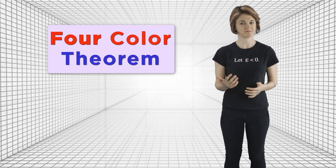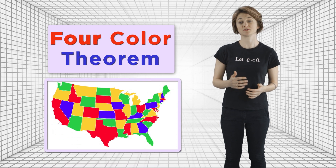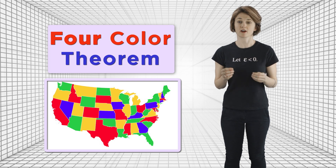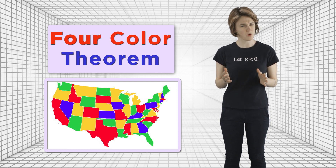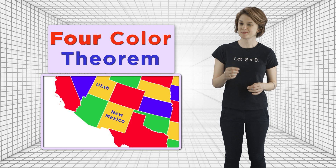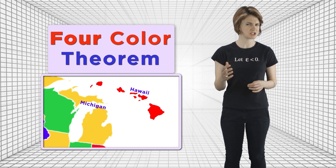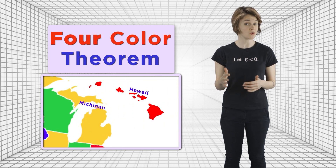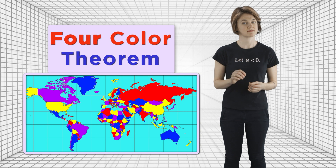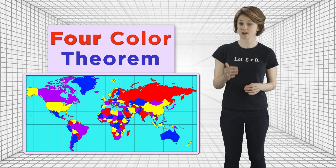Probably the most famous example of a coloring is the four color theorem. It says that you can color any map using four colors, so that no two countries, states, or regions which share a border are the same color. If they only touch at a corner, like New Mexico and Utah, then they can be the same color. The regions need to be contiguous, so states like Michigan or Hawaii, which are broken into pieces, don't work. Some maps require four colors to be properly colored and can't be colored using three, but all maps can be colored using four colors. Four is the minimum number of required colors.